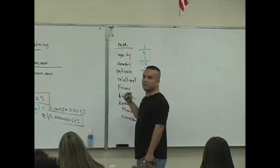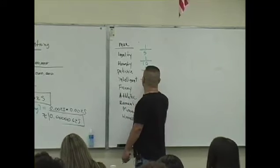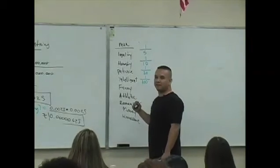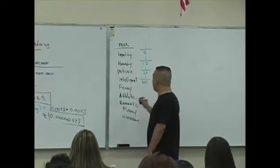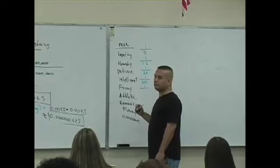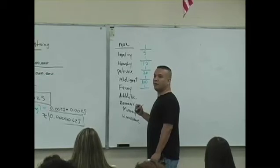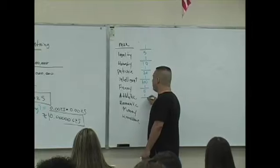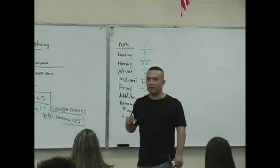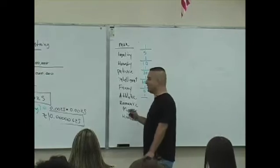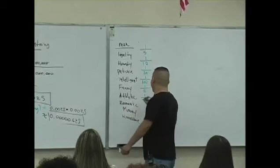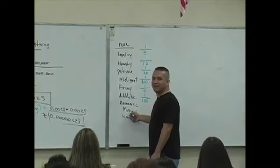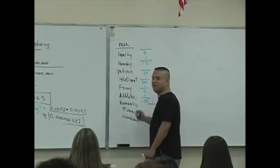Patient. How many guys are patient? One in what? Twenty. Twenty? Okay. How many guys are intelligent? One in a hundred? Only one guy out of a hundred is intelligent? How many guys are funny? One in five? How many guys are athletic? One in twenty? A hundred? How athletic does he have to be?